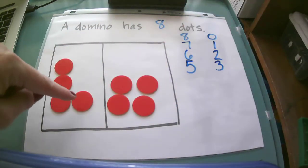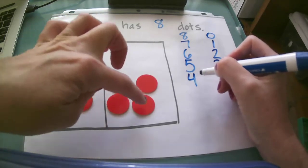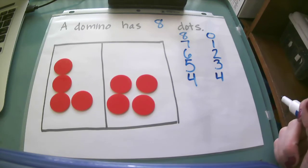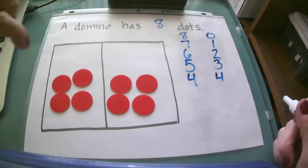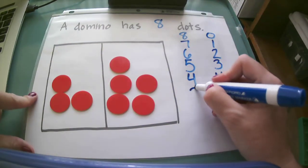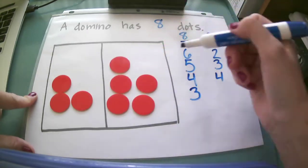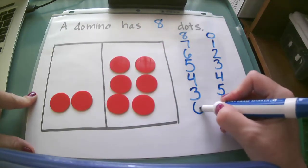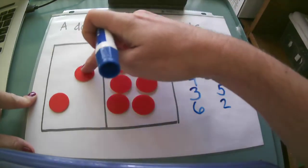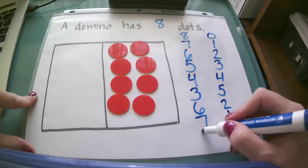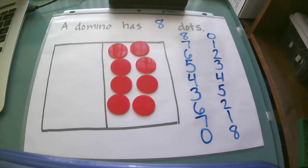One, two, three, four and one, two, three, four. You can even see how the manipulatives are set up differently — they don't look the exact same but they're still equal. Continuing my pattern, I have three and one, two, three, four, five. And I also have six and two, seven and one, and zero and eight. So these are all my number partners for eight.